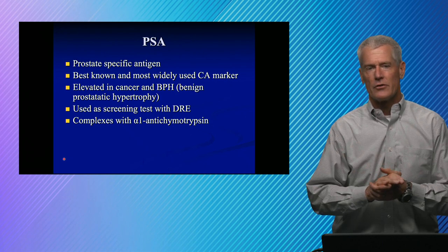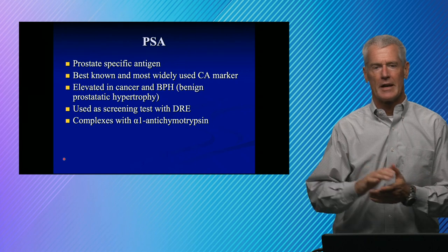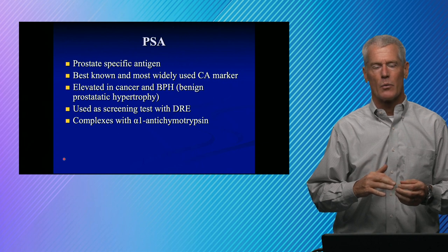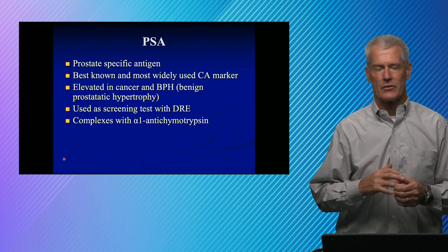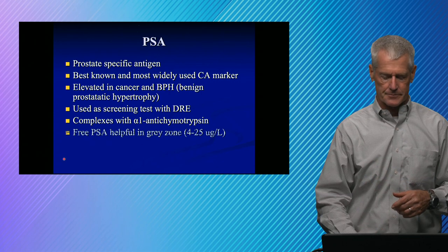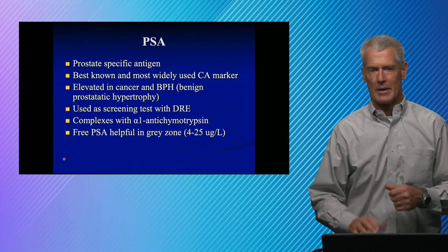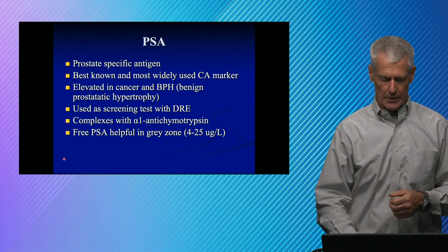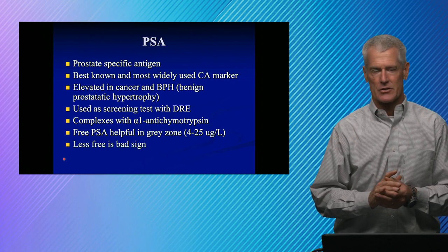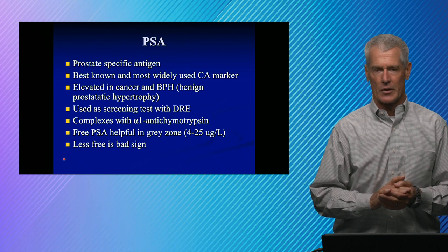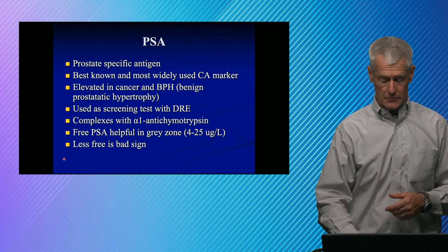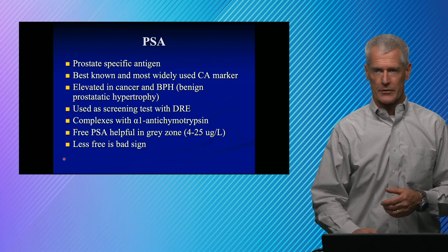There's a gray zone between 4 and 10 nanograms per mL, and that's where it might be useful to look at what we call free PSA — that's PSA that's not complexed with alpha-1 antichymotrypsin. Some would say the gray zone extends up to 25 nanograms per mL. Less free PSA is a bad sign: if your percent PSA that's free is low, that's more indicative of an invasive situation and may warrant more aggressive therapy.